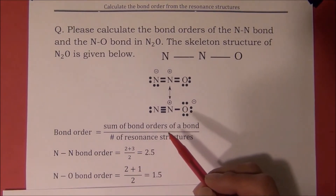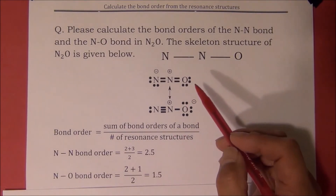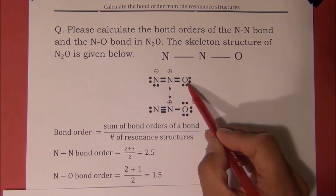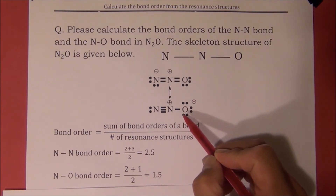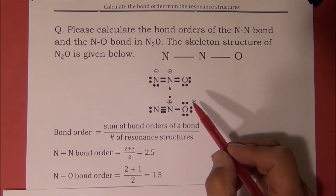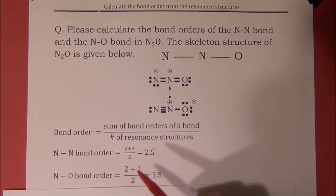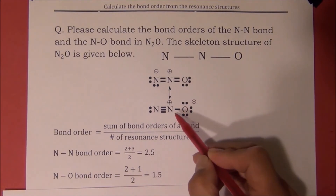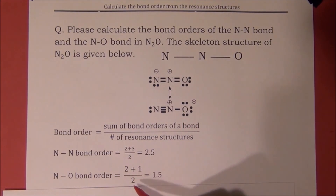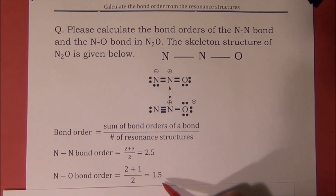To calculate the bond order of the N-O bond, we have to add the bond order of the N-O bond from the first resonance structure and the bond order of the N-O bond from the second resonance structure, then divide it by the total number of resonance structures. The calculation is 2 plus 1, then divide it by 2. The answer for the N-O bond order is 1.5.